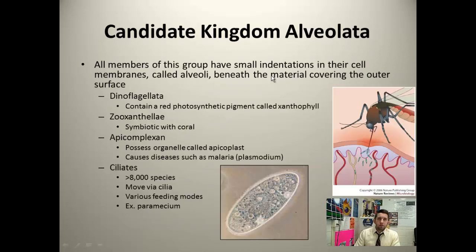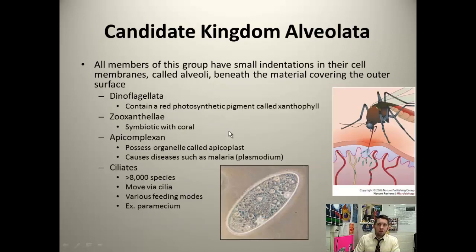Moving on from the euglenozoa — the alveolata. They have alveoli, which are indentations in their cell surface. Within the alveolata, we have the dinoflagellates, the zooxanthillae, the apicomplexin, and the ciliates. Look at the diversity within this candidate kingdom alone — it's pretty staggering.